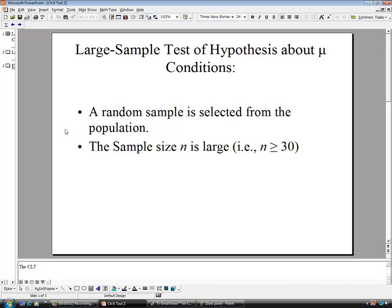One of the types of hypothesis testing we can do about one sample would be a large sample test about the mean μ. Now we have two conditions for this. One is that we take a random sample from the selected population. If it's not a random sample, it's not going to be worth as much as it would if it was, certainly.